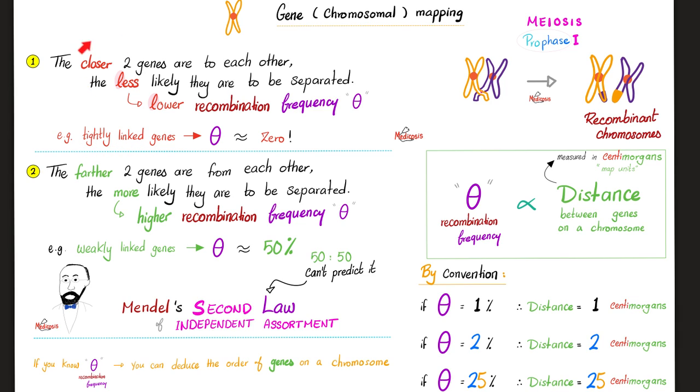So let's recap. If we are closer to each other, theta is low. If we are far away from each other, theta is high. So you can deduce that theta is directly proportional to the distance between two genes on a chromosome. The higher the distance, the higher the theta, the lower the distance, the lower the theta.